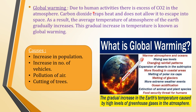Global warming: due to human activities, there is excess CO2 in the atmosphere. Carbon dioxide traps heat and does not allow it to escape into space. As a result, the average temperature of the earth's atmosphere gradually increases. This gradual increase in temperature is known as global warming. Causes of global warming include increase in population, increase in number of vehicles, pollution of air, and cutting of trees.